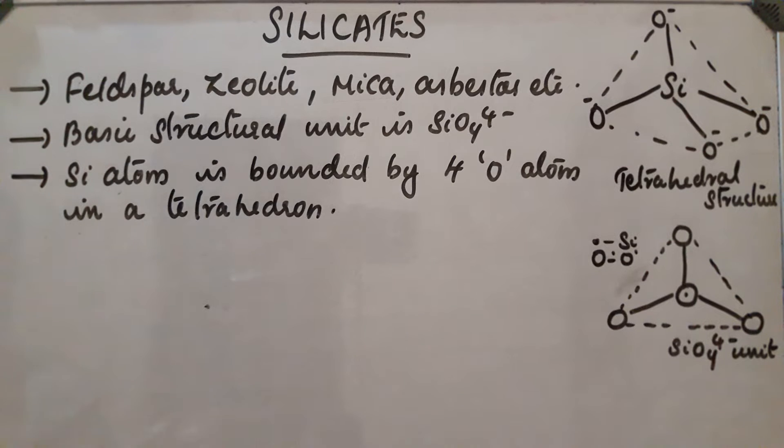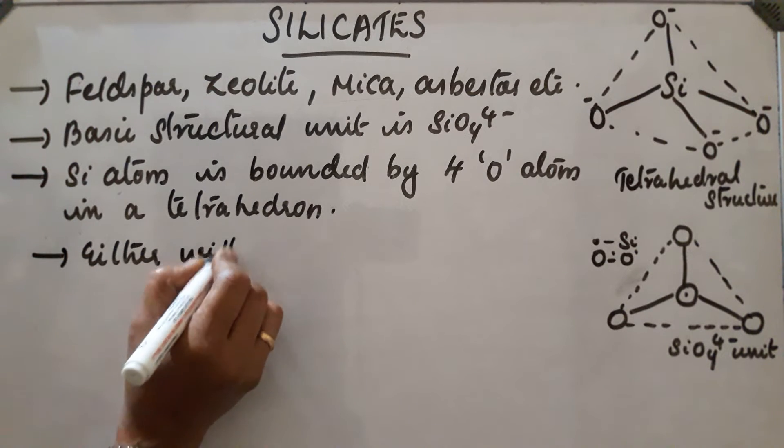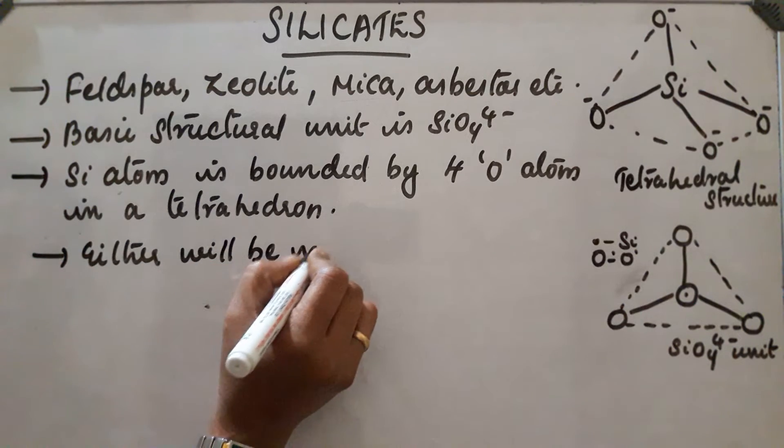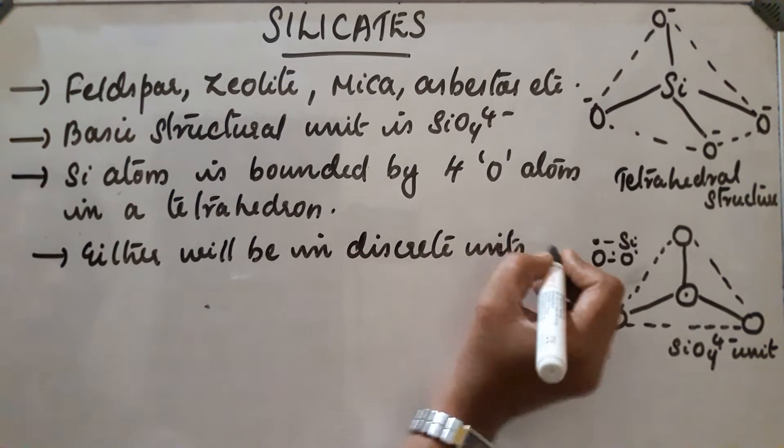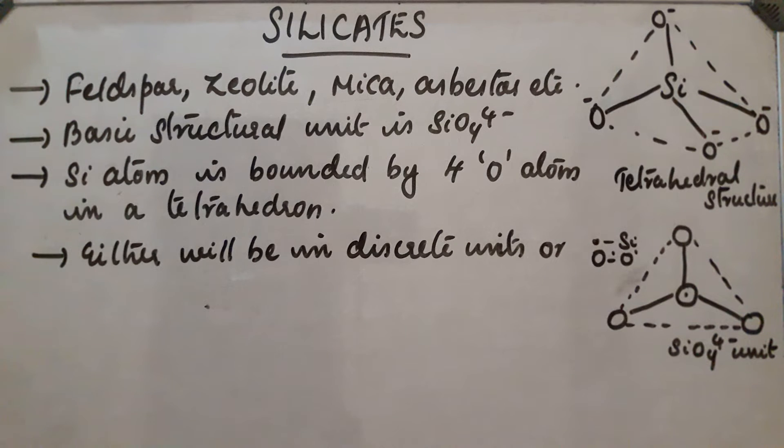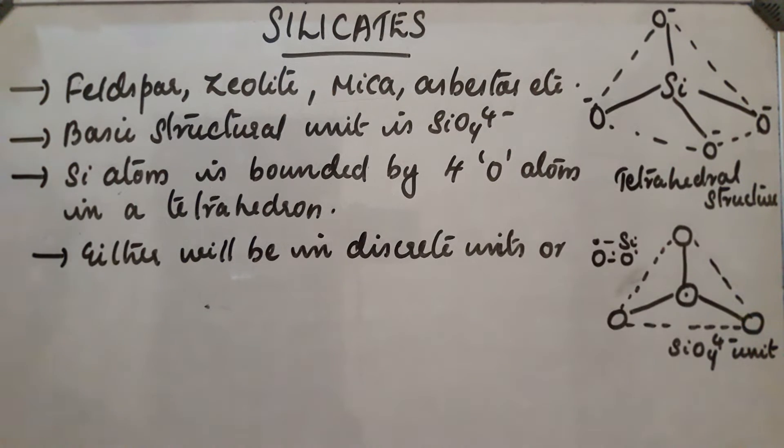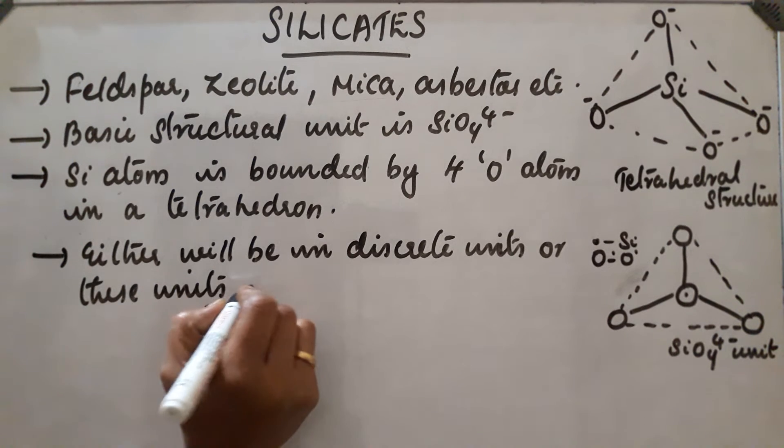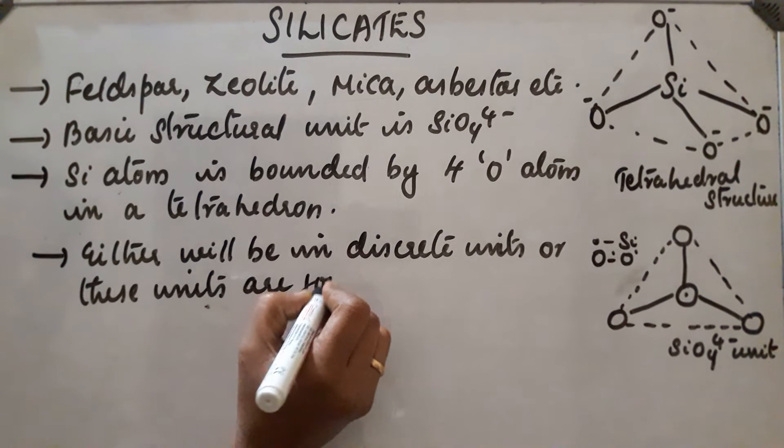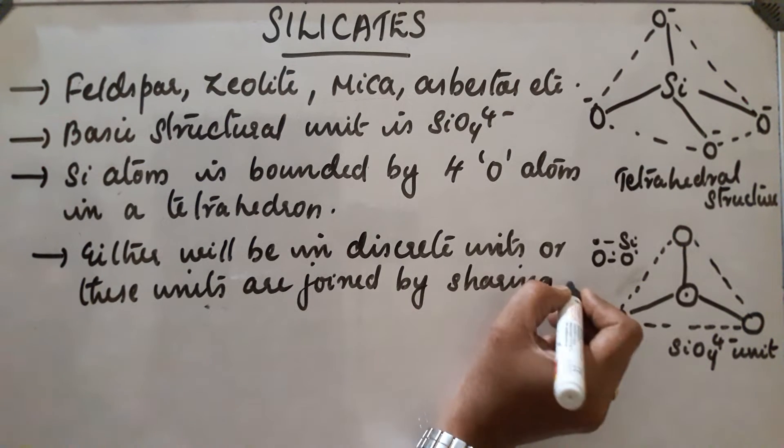These different units are either in discrete units or these several units are linked together at the corners by sharing oxygen atom at the corners of the tetrahedral.